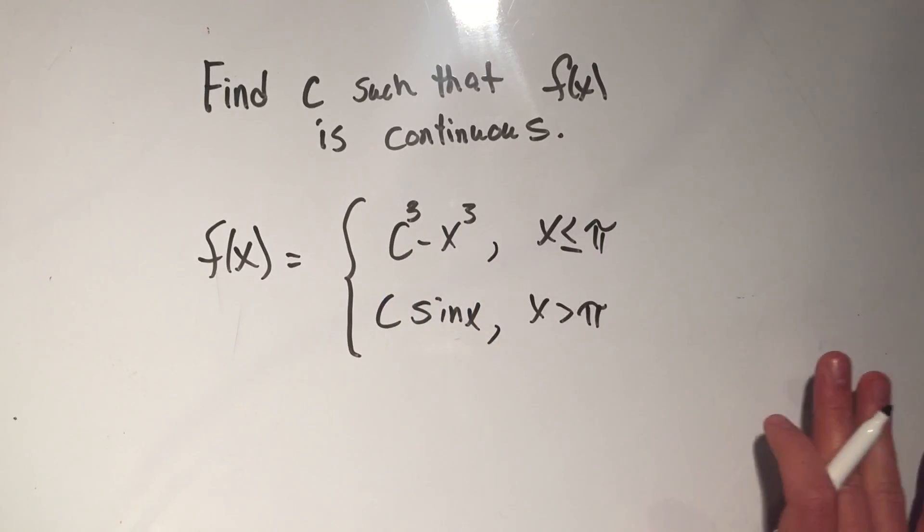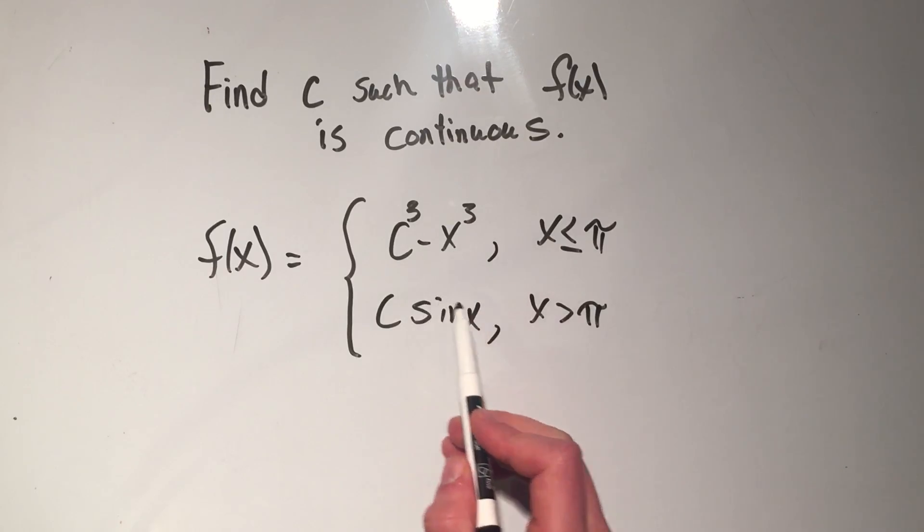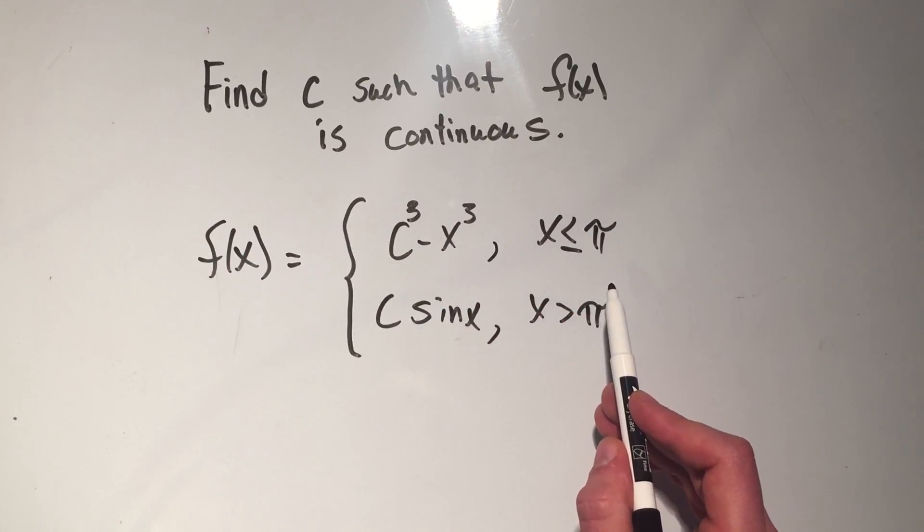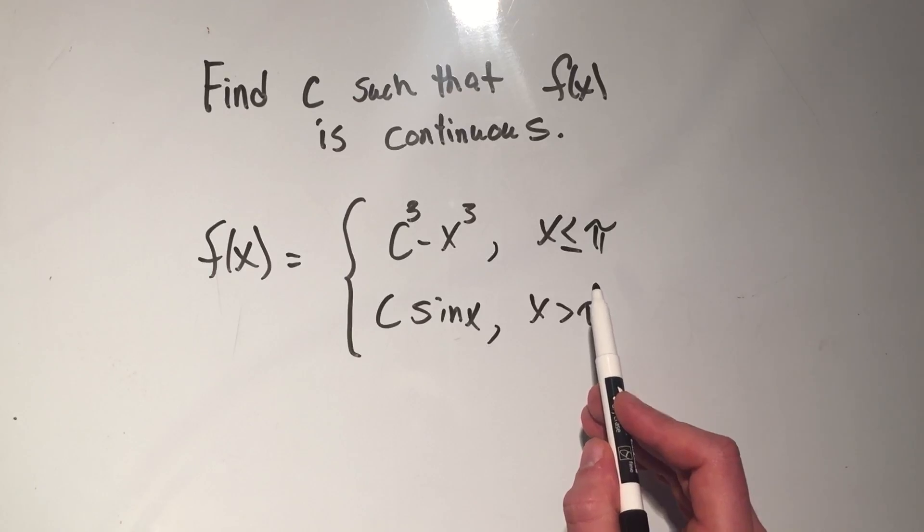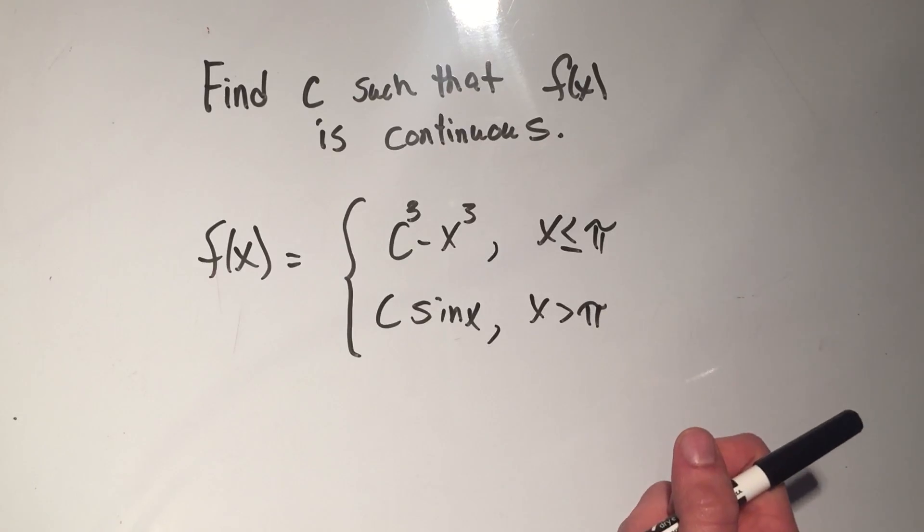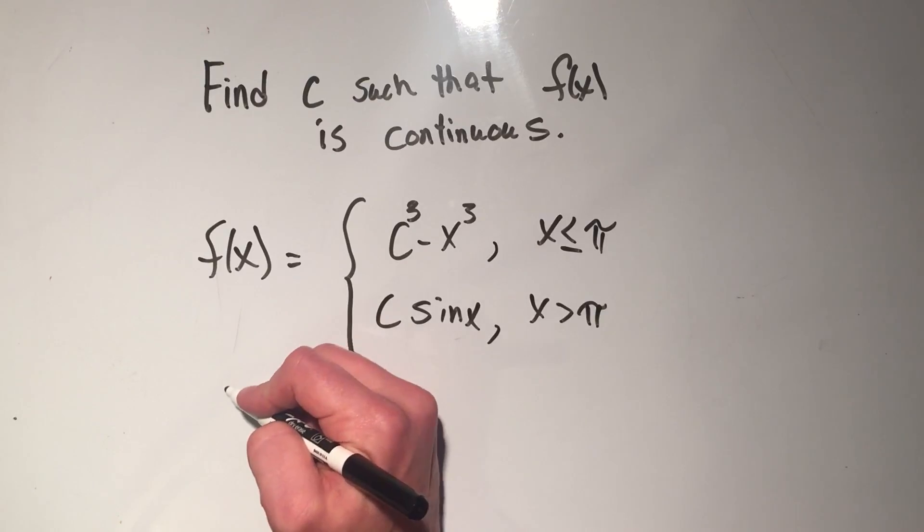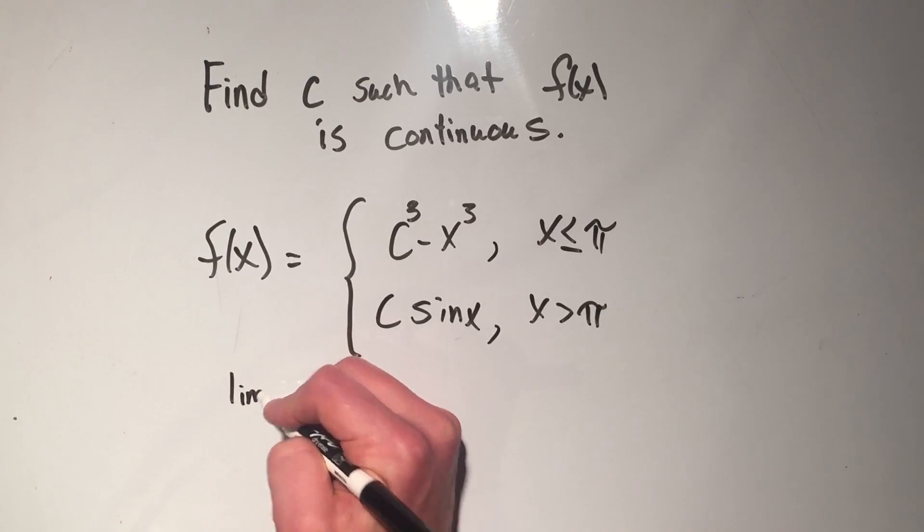When you learn the definition of continuity, it said that the limit as x approaches a of f of x must equal f of a. So that means whenever I take the limit of this thing, the limit has to exist at that point. So let me take the limit of this thing as x approaches pi. And since I've got two different ways to approach pi,